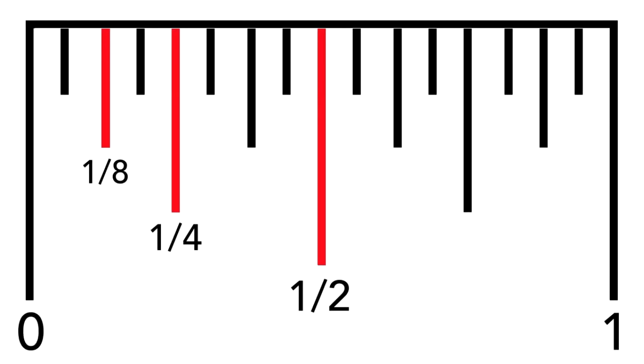You should probably stop and notice what is happening here. 1 half led to 1 fourth, which led to 1 eighth. Each of these bottom numbers is double the previous one. The bottom number went from 2 to 4 to 8 in the fraction.